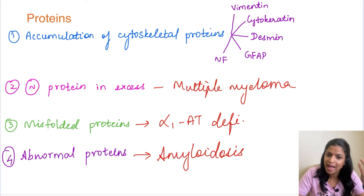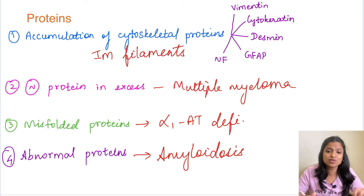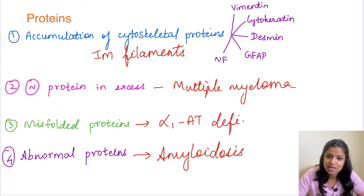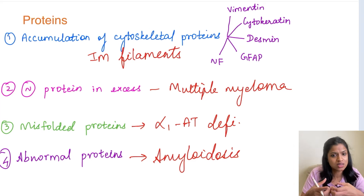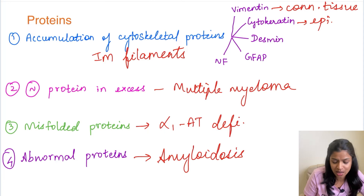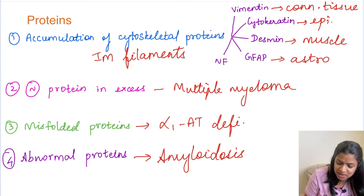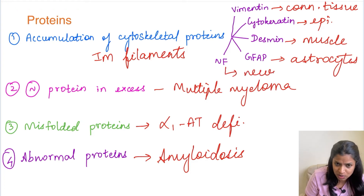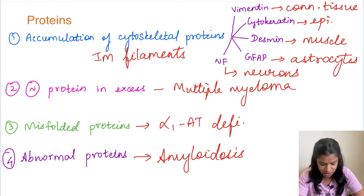We can also have cytoskeletal protein accumulation. Cytoskeletal proteins include actin, myosin, and intermediate filaments. The types of intermediate filaments are: vimentin, cytokeratin, desmin, GFAP, and neurofilament. These proteins support the cell, maintain its shape, and provide scaffolding. Vimentin is seen in connective tissue; cytokeratin in epithelial tissue; desmin is specific for muscle tissue; GFAP is specific for astrocytes/glial tissue; and neurofilament is for neurons.